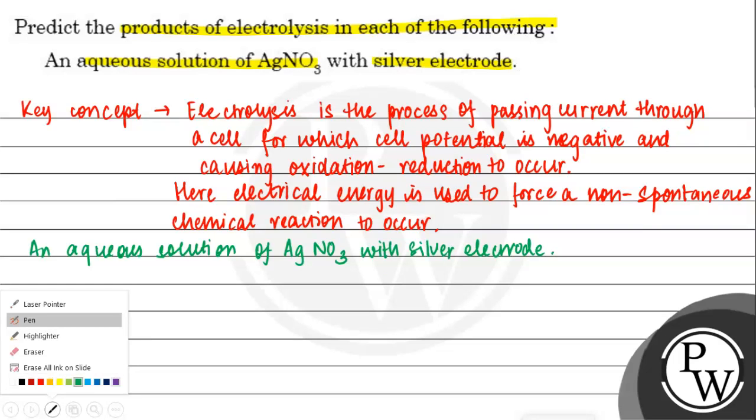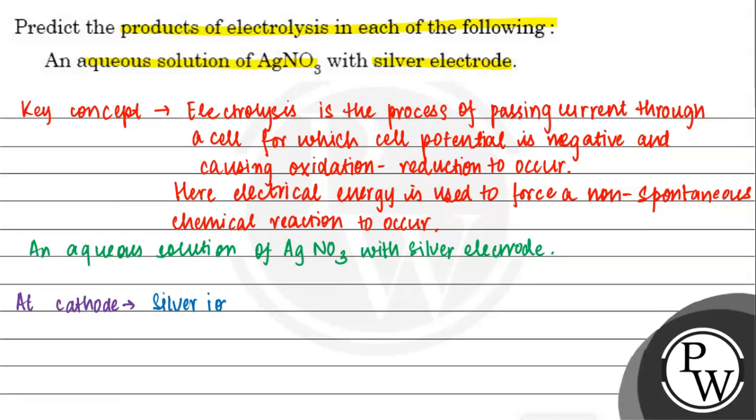We will talk about at cathode. At cathode, silver ions have lower discharge potential than hydrogen ions. Hence,